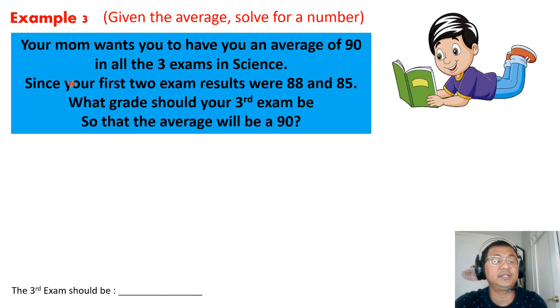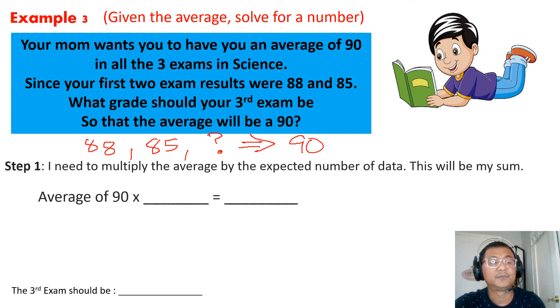This is a challenge question. Your mom wants you to have an average of 90 in all three exams in science. Since your first two exam results were 88 and 85, what grade would your third exam be so that the average will be 90? That's a different type of question. You already have the 88, you already have the 85, but you don't know what the third exam is, but the average will be a 90. First, I need to multiply the average by the expected number of data. Since I want it to be 90 and how many datas are there, 1, 2, and 3. I multiply 90 by 3 and I get 270.